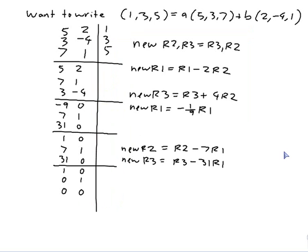Let me write down all the row operations and apply them to [1,3,5]. Swapping rows 2 and 3 gives me [1, 5, 3]. New row 1 is row 1 minus 2 times row 2: 1 - 2×5 = -9. New row 3 is row 3 plus 4 times row 2: 3 + 4×5 = 23. New row 1 is minus one-ninth of row 1: gives +1. New row 2 is row 2 minus 7 times row 1: 5 - 7 = -2. New row 3 is row 3 minus 31 times row 1: 23 - 31 = -8.